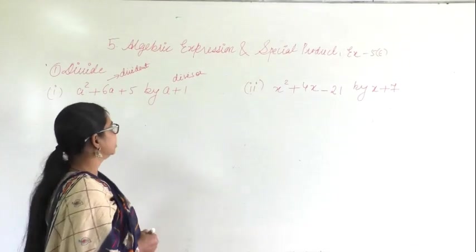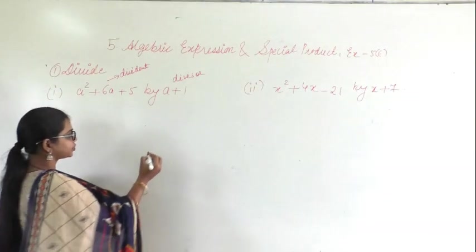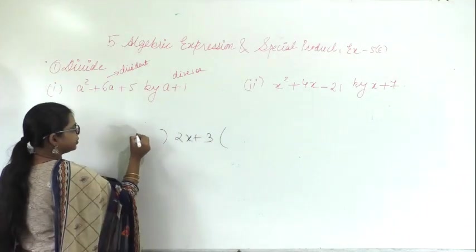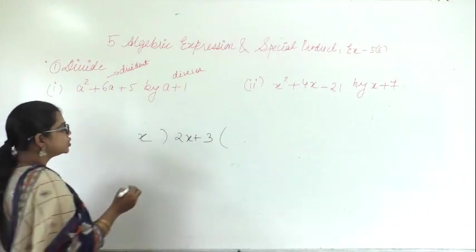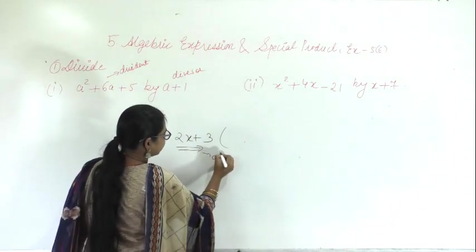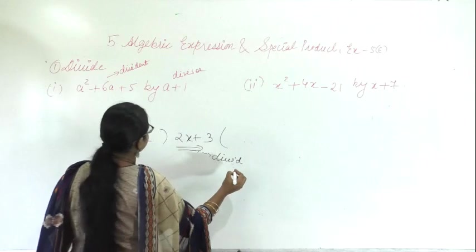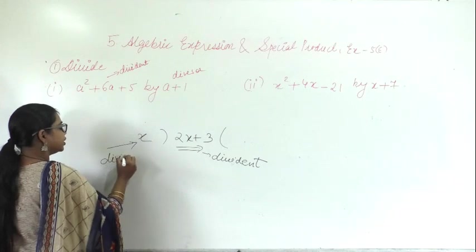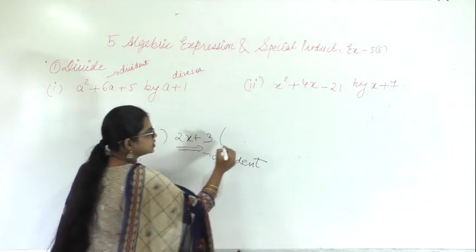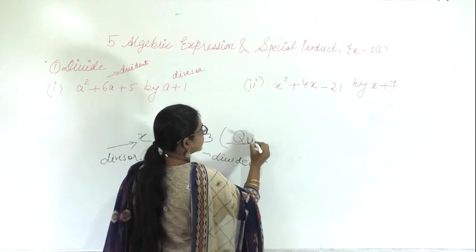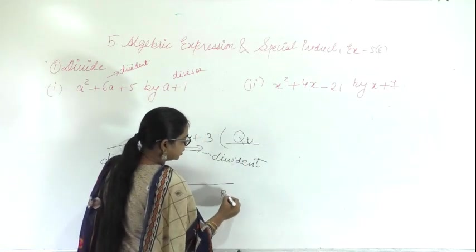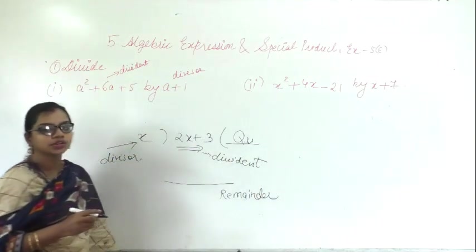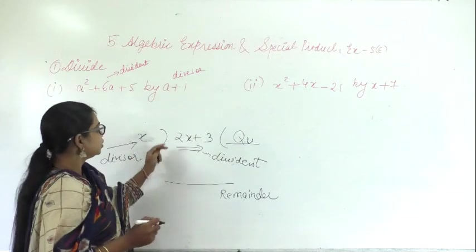In the division method, if I write 2x plus 3 divided by x, this is the dividend. By which we will divide is the divisor, the answer we get is the quotient, and what remains is the remainder. This is the polynomial.